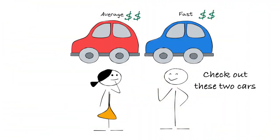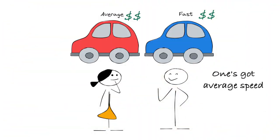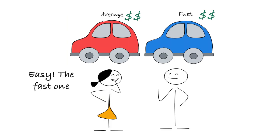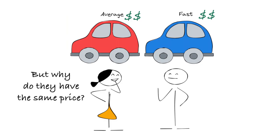Imagine this conversation with a car dealer: 'Hey, check out these two cars. One's got average speed, the other's blazing fast. Same price. Which one do you want?' Easy — the fast one. But why do they have the same price?